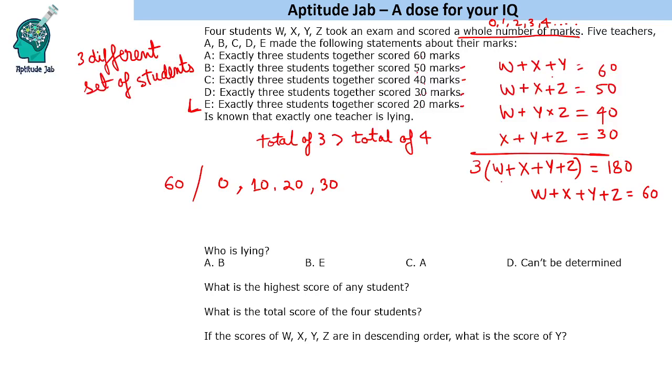These will be the marks of the students in any order. This was just to explain - it doesn't mean WXY equals 60. The total is 60, the scores can be in any order. So the liar is E.